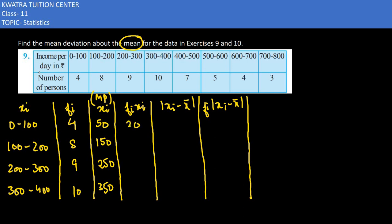Now f×x multiply. We will multiply 8×150. So 8 into 150 is 1200. Then we have 250 into 9. So 250 into 9 is how much will it be? 2250. And then next would be 3500.